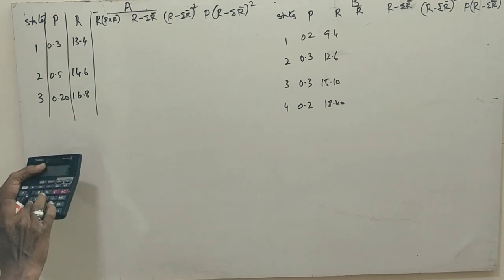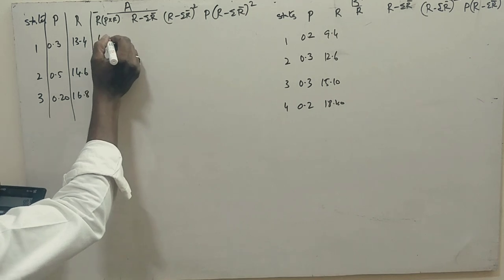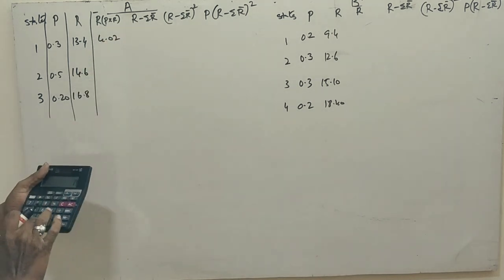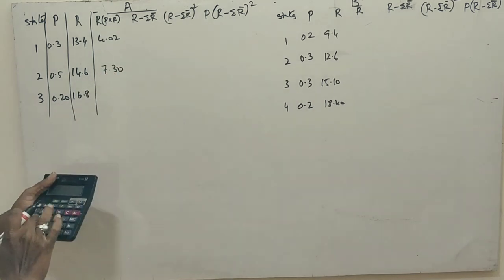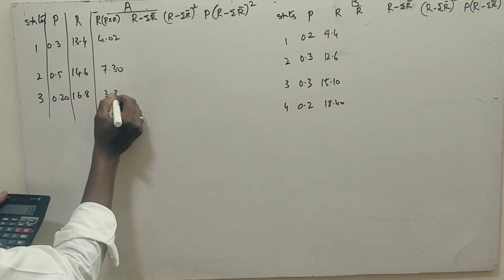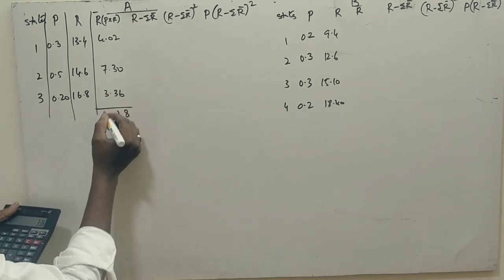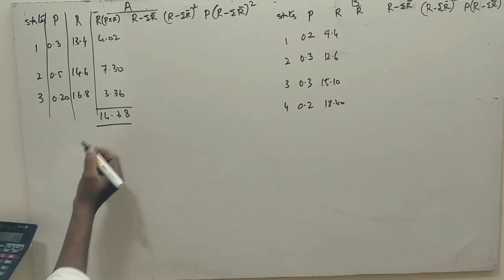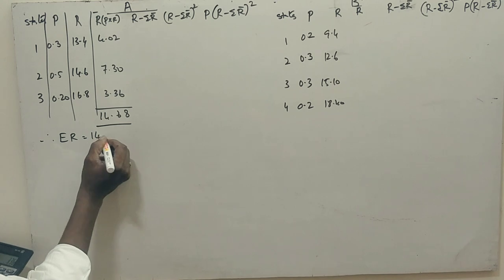For Security A: 0.3 into 13.4 is 4.02, 14.6 into 0.5 is 7.3, 16.8 into 0.2 is 3.36. Check the totals: 14.68. Therefore, expected return is 14.68.